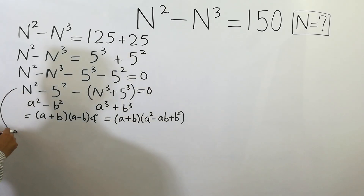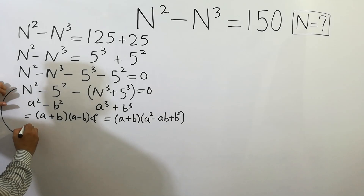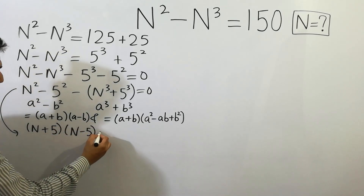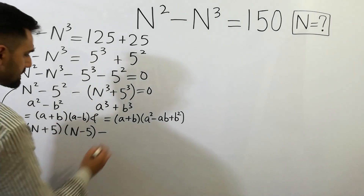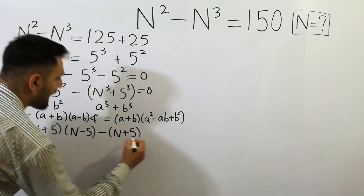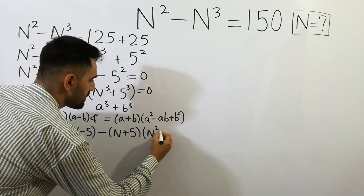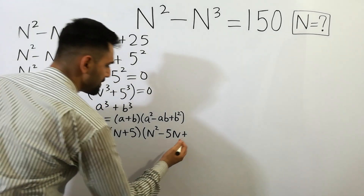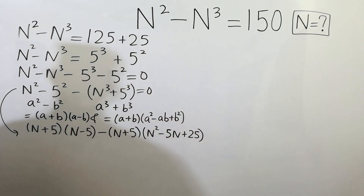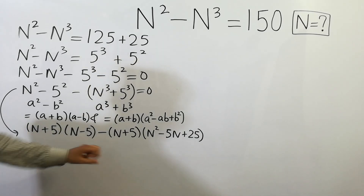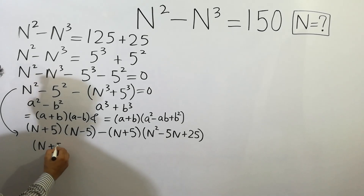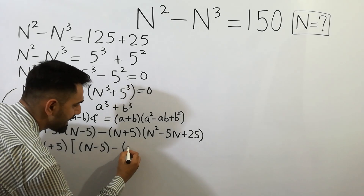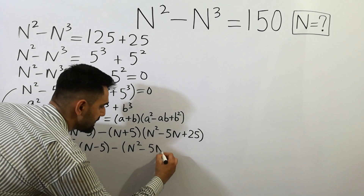So we can solve it here. n squared minus 5 squared equals to (n plus 5)(n minus 5), and n cubed plus 5 cubed equals to (n plus 5)(n squared minus 5n plus 25).